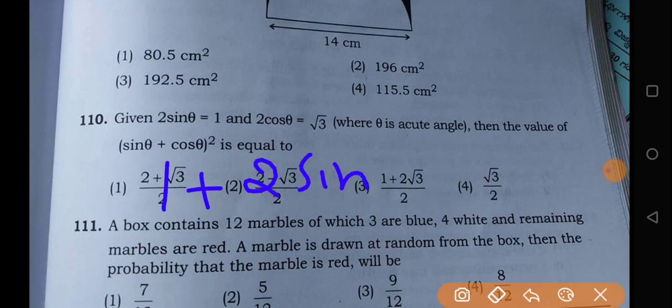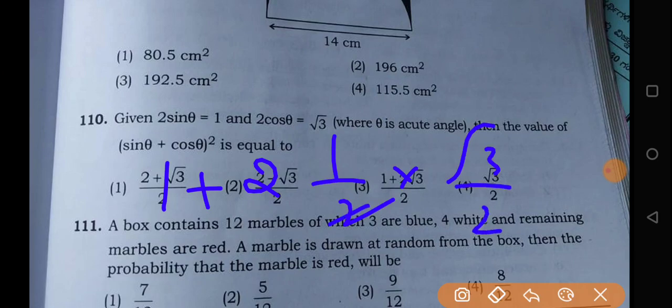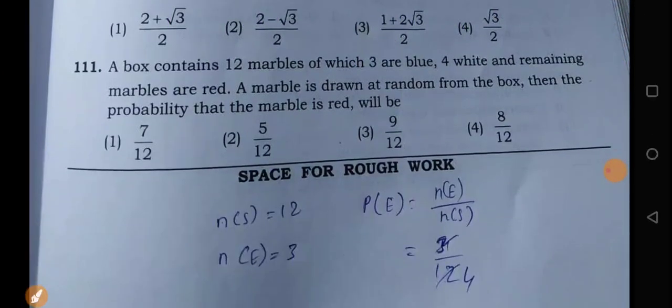So, 2 sin theta, cos theta. So, 2 into sin 1 by 2. Right. 2 into 1 by 2 into root 3 by 2. Cancel, cancel. So, just 1 plus root 3 by 2. The answer will be option e.